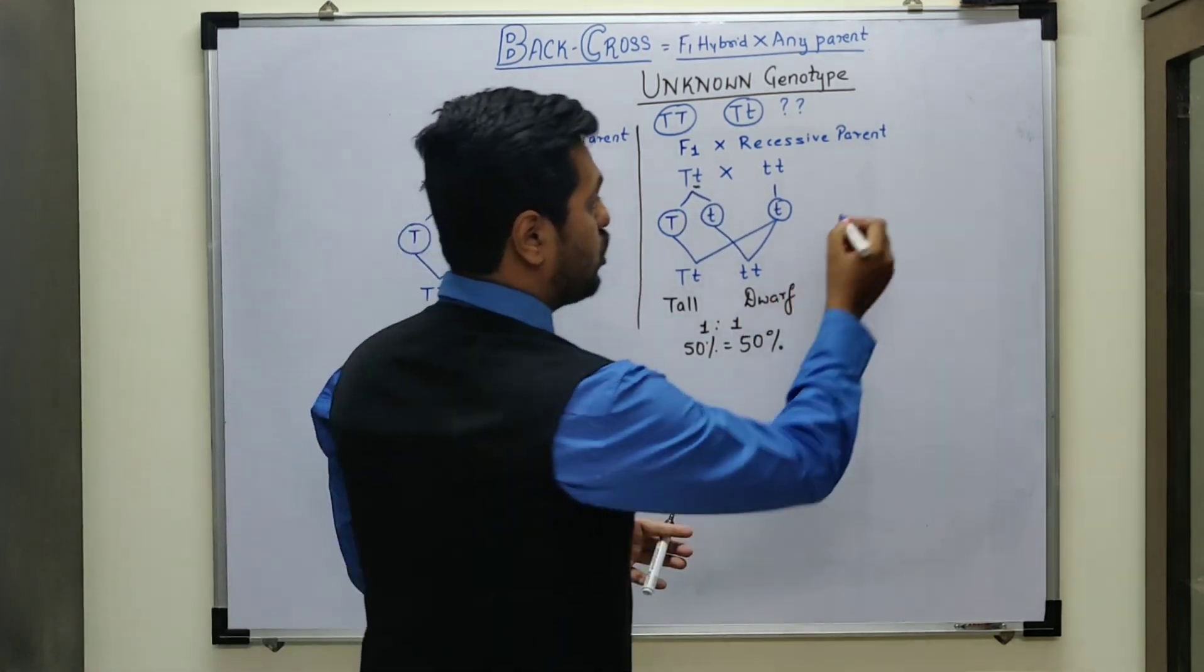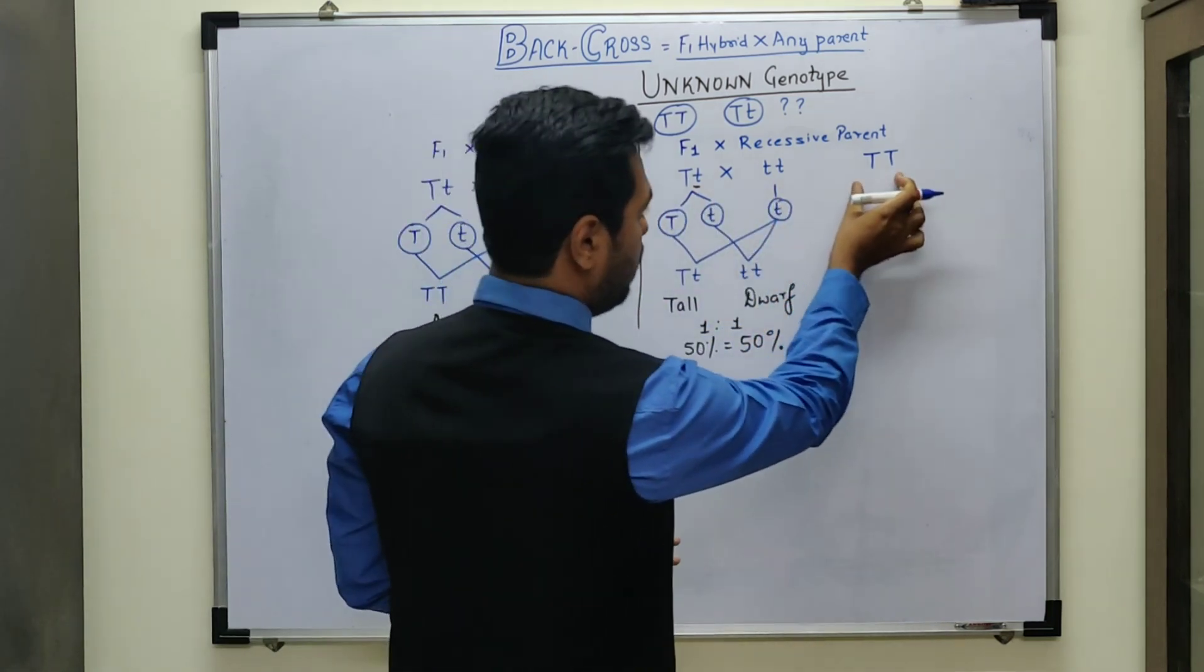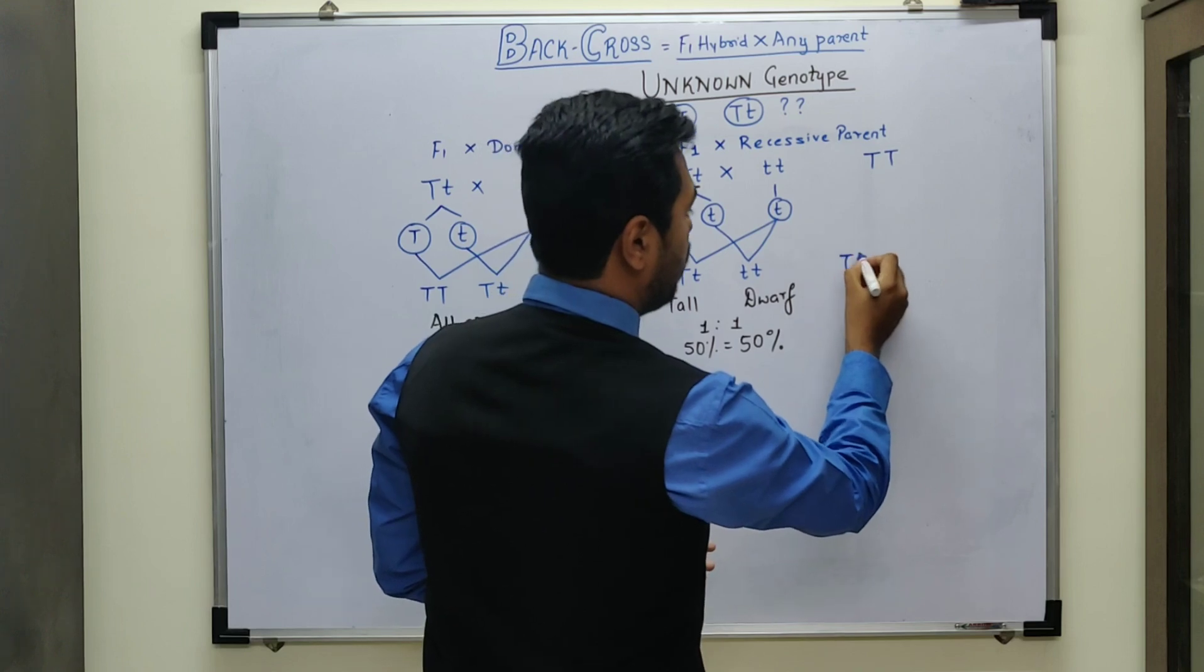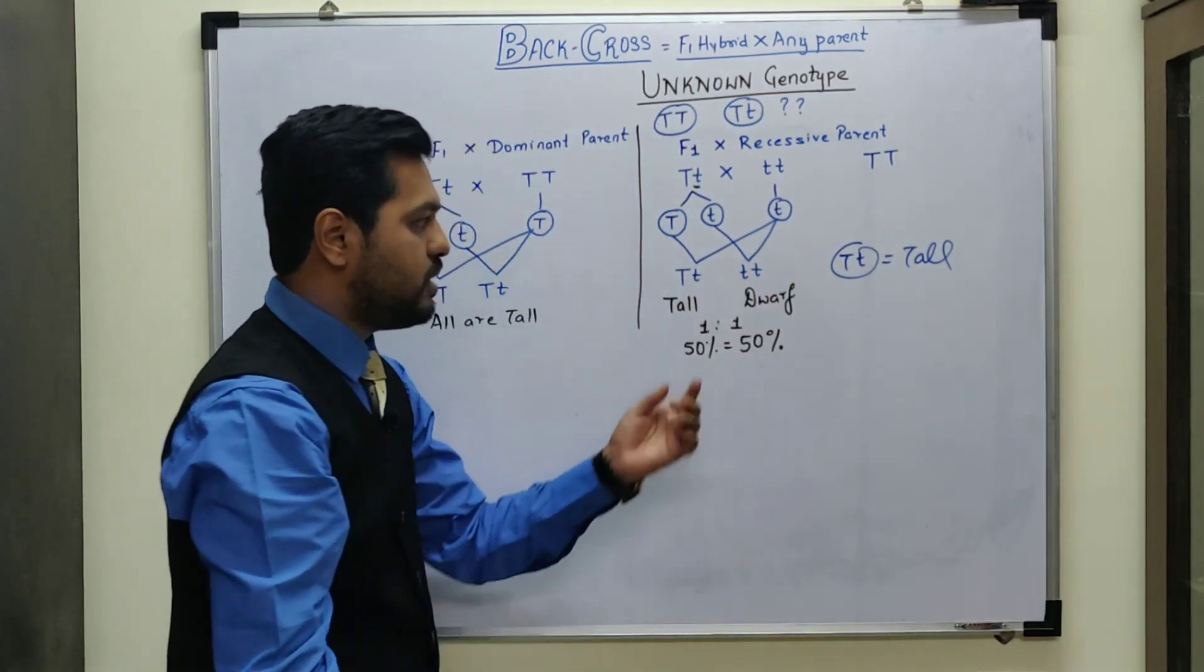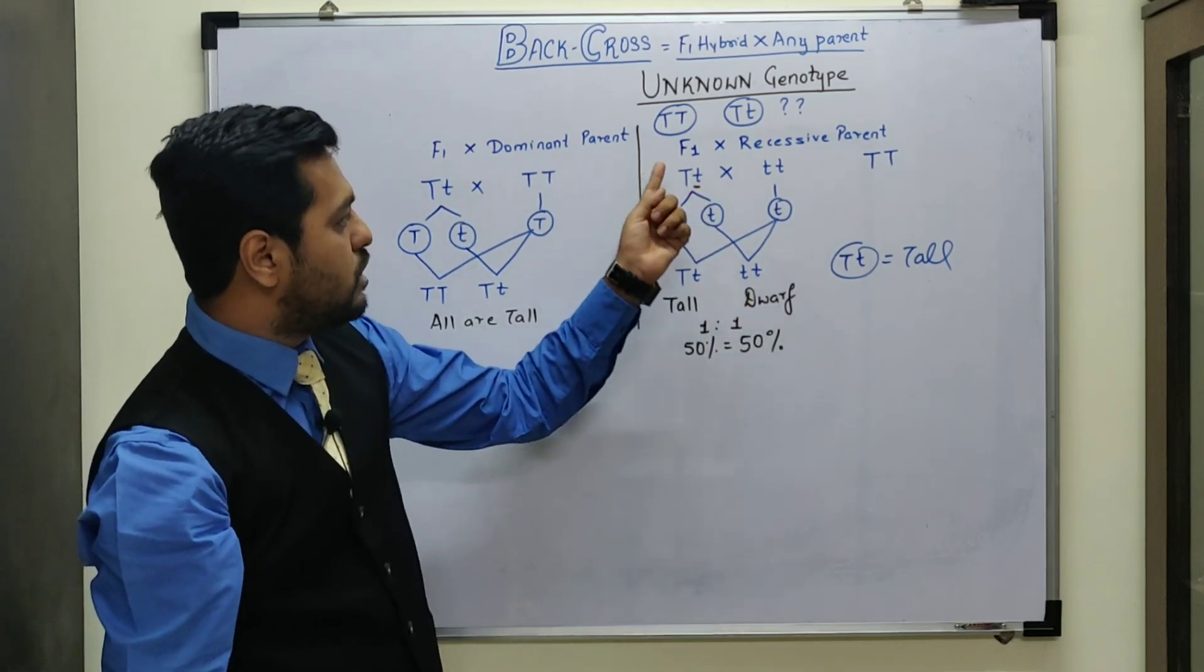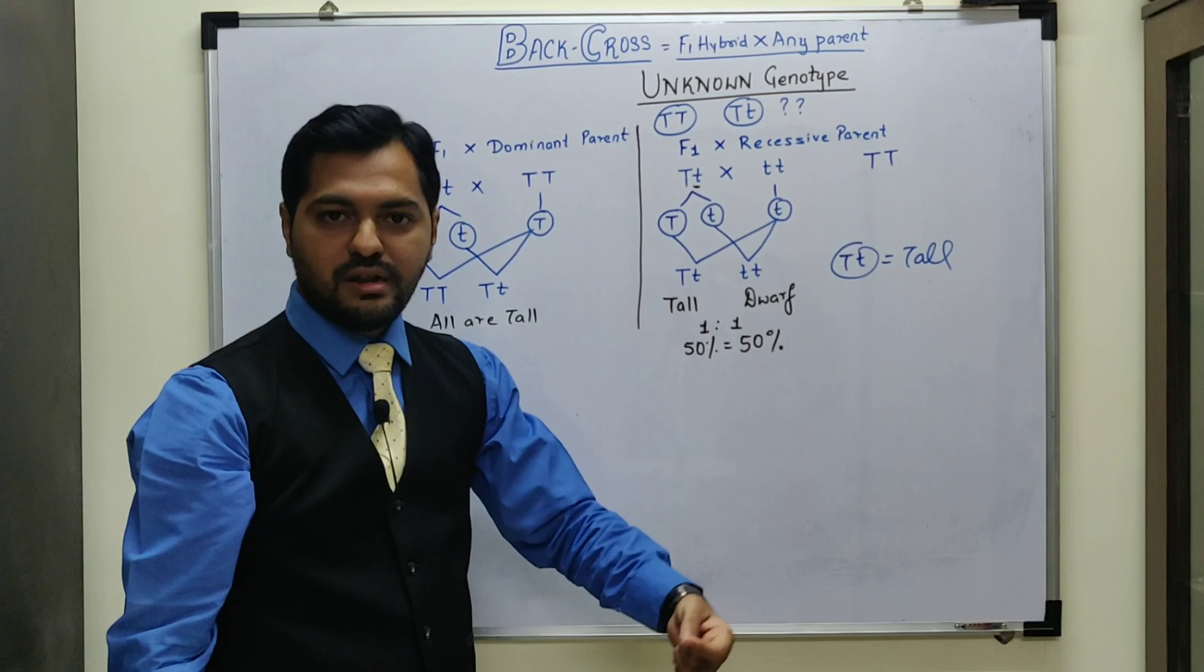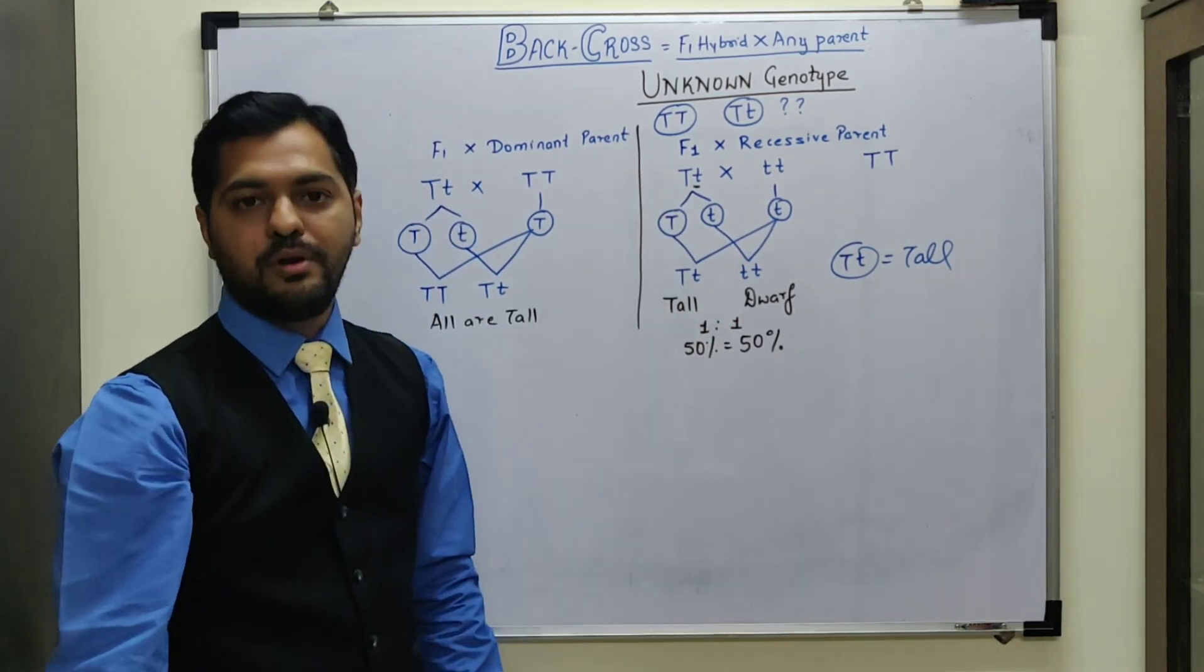Since if this organism was pure tall, and we would have crossed with the pure dwarf, then definitely all the offspring would have been tall only. But here, the character of dwarfness is 50%, that means this tall is a hybrid tall. So this back cross has given us the final testing, that this is not pure, but this is a hybrid organism.